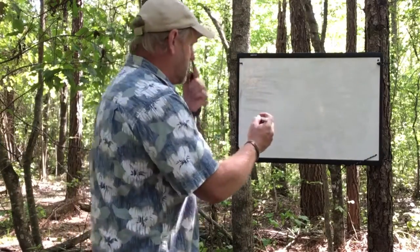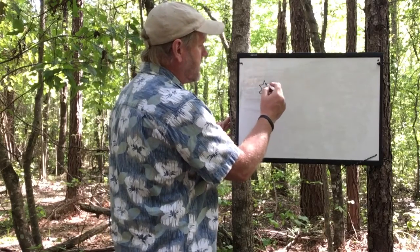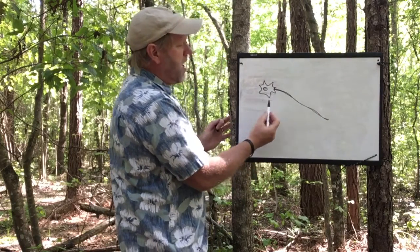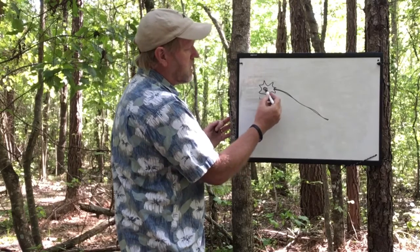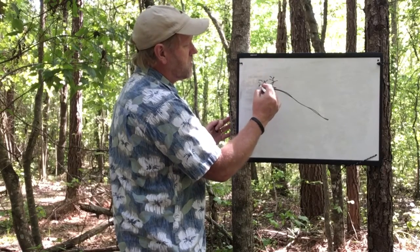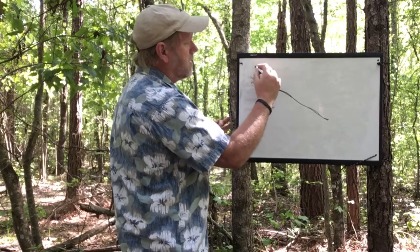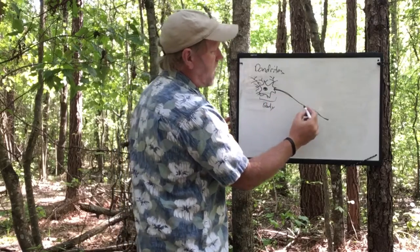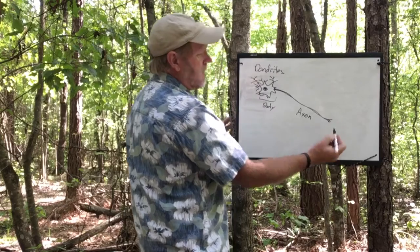The basic structure of a nerve: you've got a cell body right here with a little nucleus in the middle, and coming off this end are structures called dendrites.